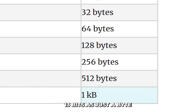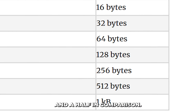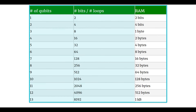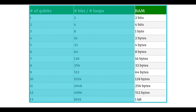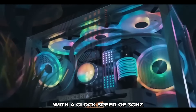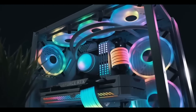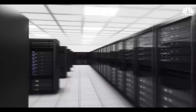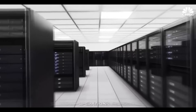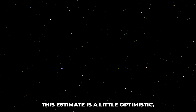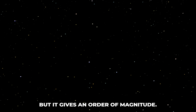We can see the explosive nature of the bits. It takes only 13 qubits to store a kilobyte, while 13 bits is just a byte and a half in comparison. At a larger scale with both memory and time, assuming a classical computer with a clock speed of 3 GHz and one operation per clock cycle, the computer could perform 3 billion operations per second.